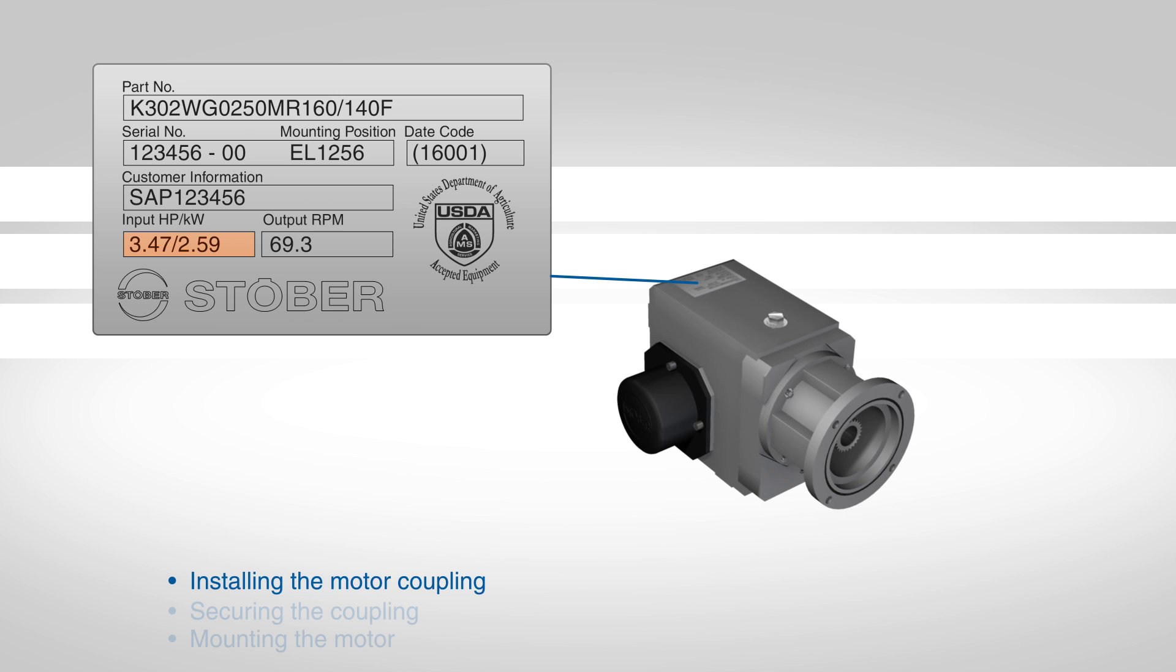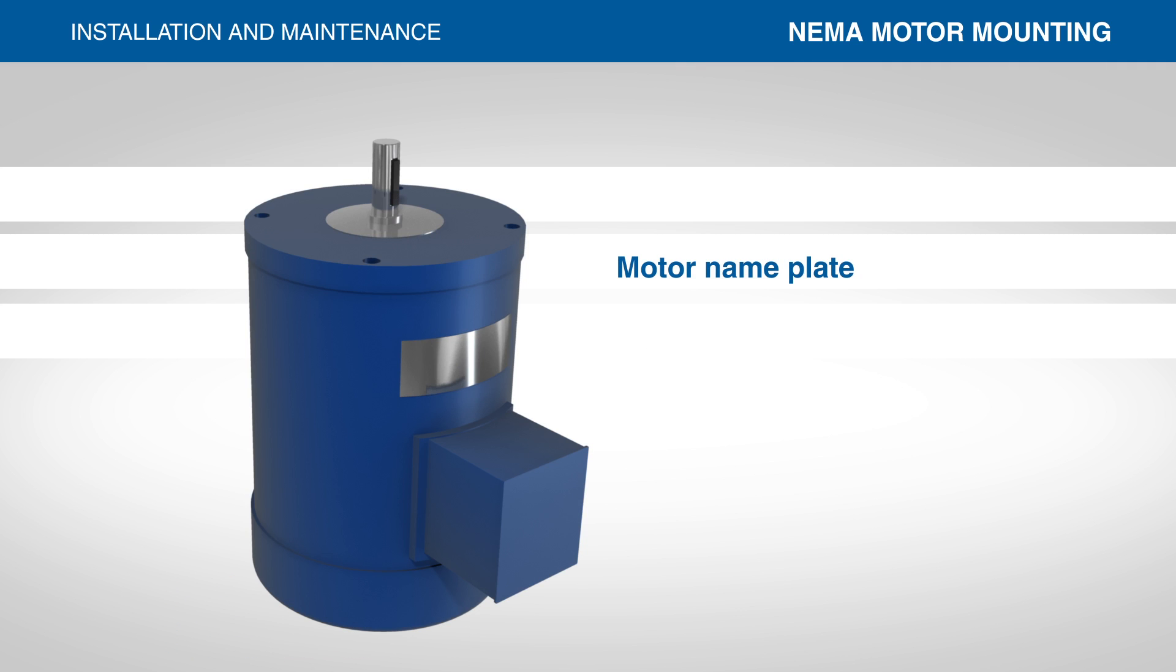The horsepower capacity is shown on the reducer's nameplate. Check the motor nameplate to make sure it is the correct horsepower, frame size, and speed for the reducer.